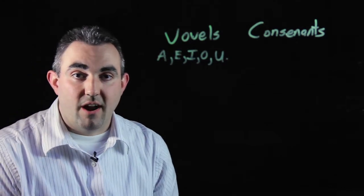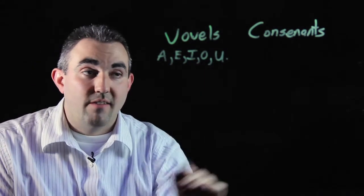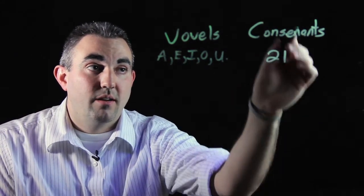So because there's 26 letters in our alphabet minus those five vowels, we're looking at 21 of these consonants.